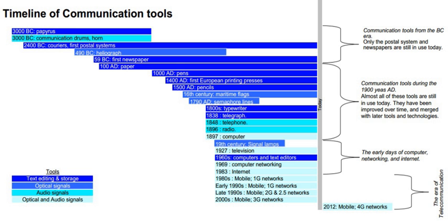1992 – Neil Papworth sends the first SMS. Internet 2 organization is created. IBM ThinkPad 700c laptop computer created — it was lightweight compared to its predecessors.